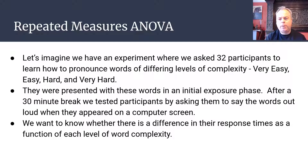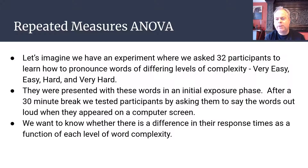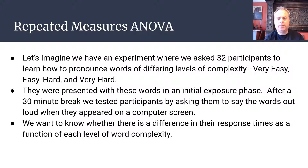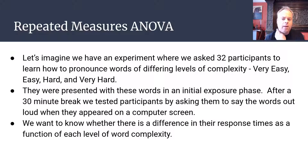We're going to focus on an example. Imagine we have an experiment where we asked 32 participants to learn how to pronounce words with different levels of complexity. The four levels of our factor are: very easy, easy, hard, and very hard — so we've got four levels of our complexity factor in terms of pronunciation. Participants were presented with words of these four types.